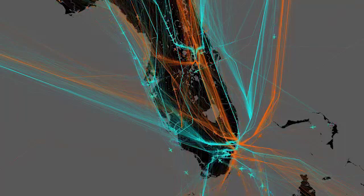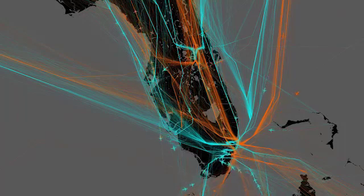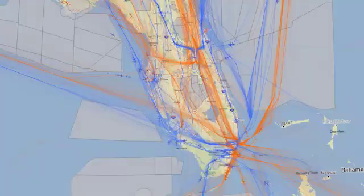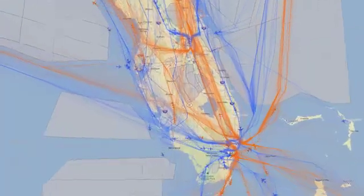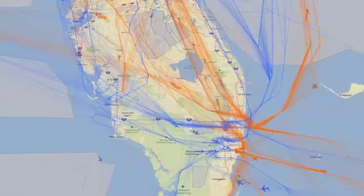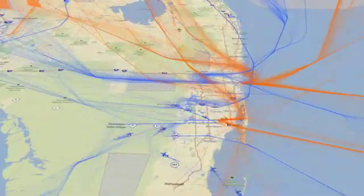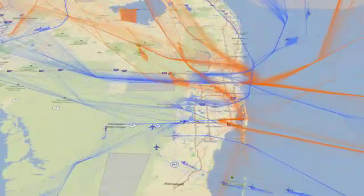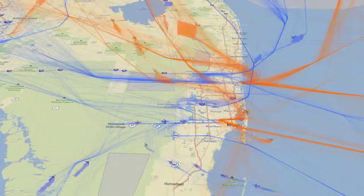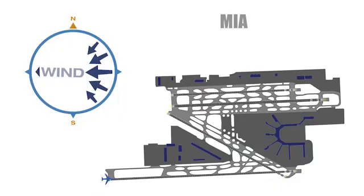PBN procedures are similar to the network of highways, but for aviation. Making improvements and changes to the system is a complex process involving many different key stakeholders. This process can take as long as two years to ensure factors such as safety, environmental, and airspace complexities are met.